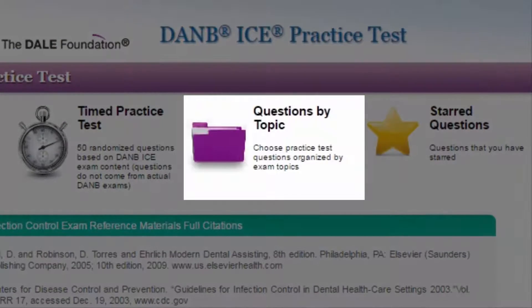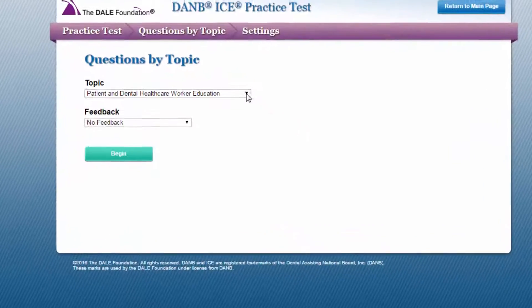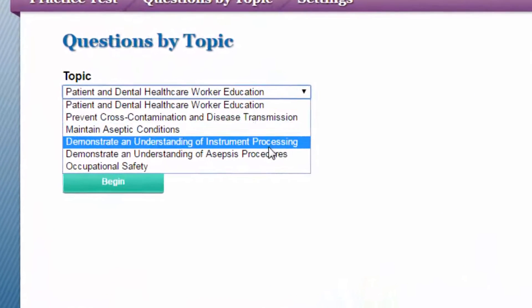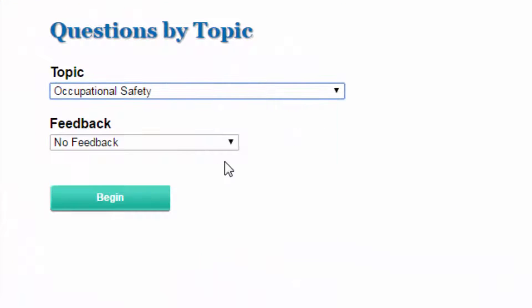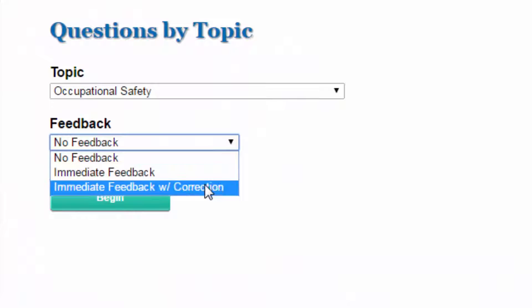Questions by topic allows you to choose which DANB exam topics you want to review and can be based on the feedback received during the timed practice test. You will select your feedback options just as before.